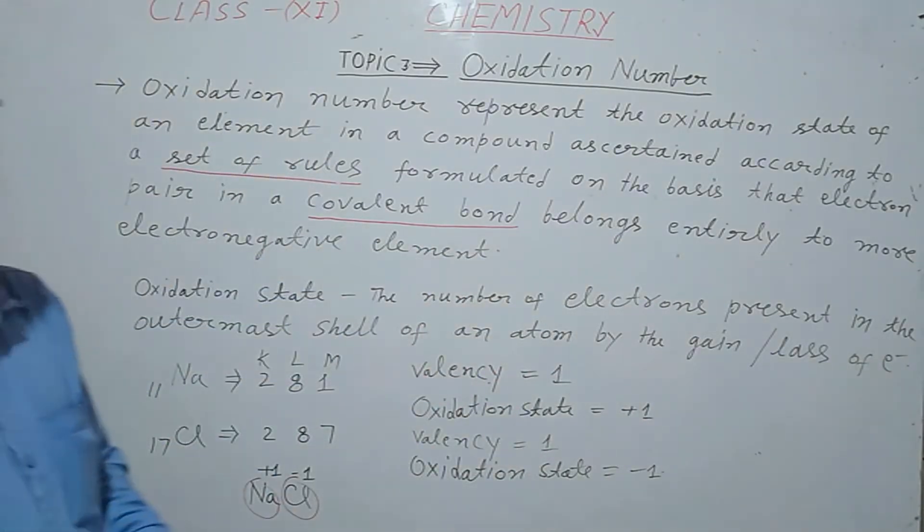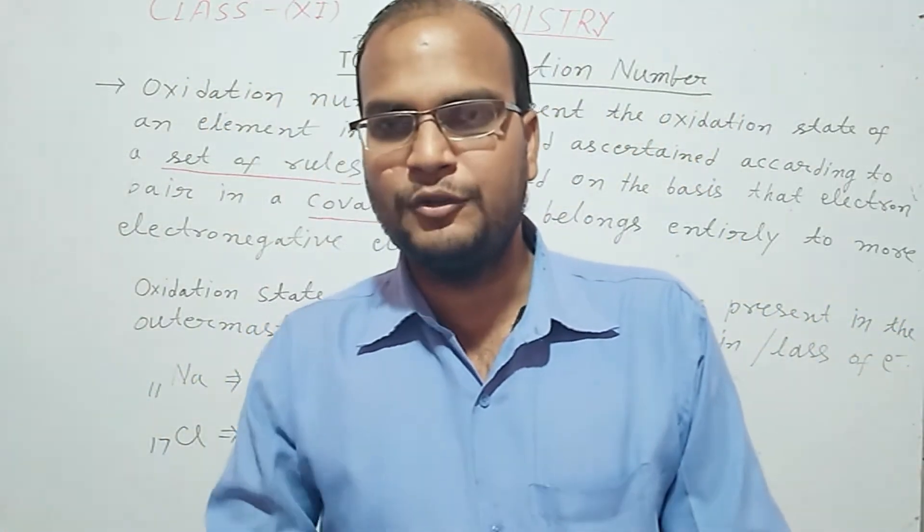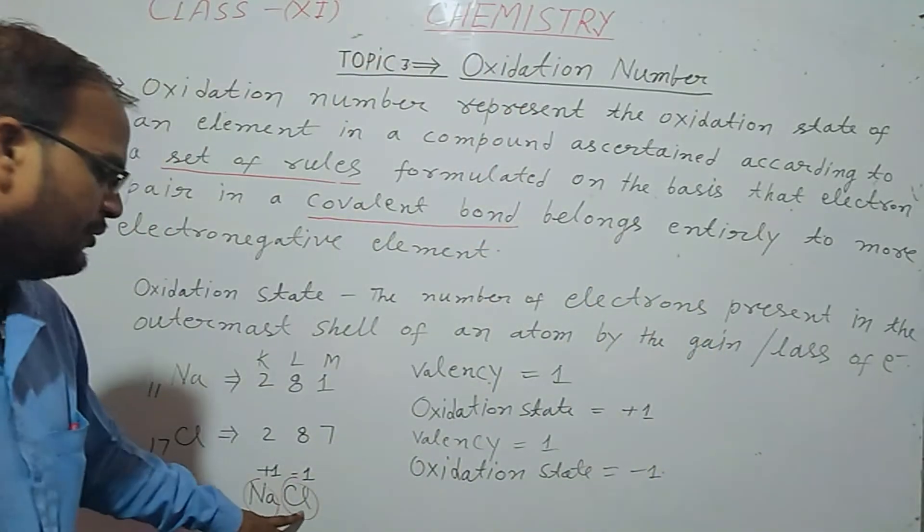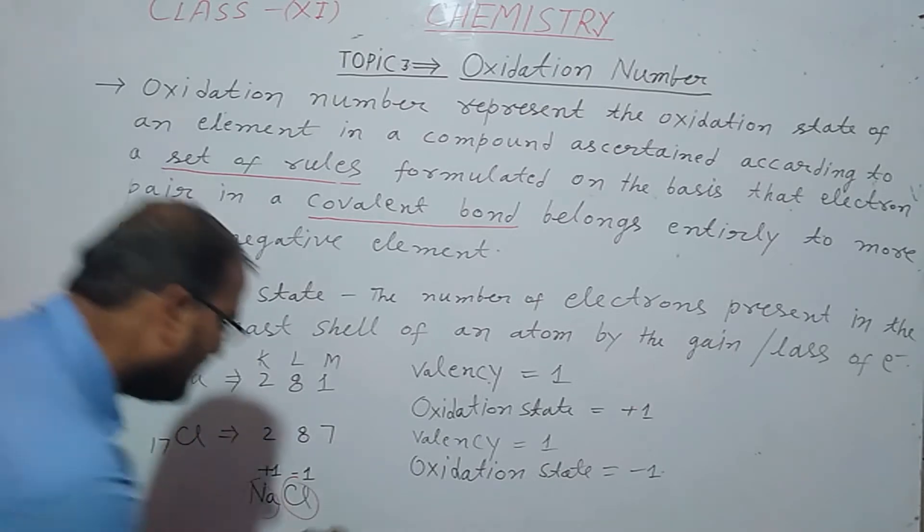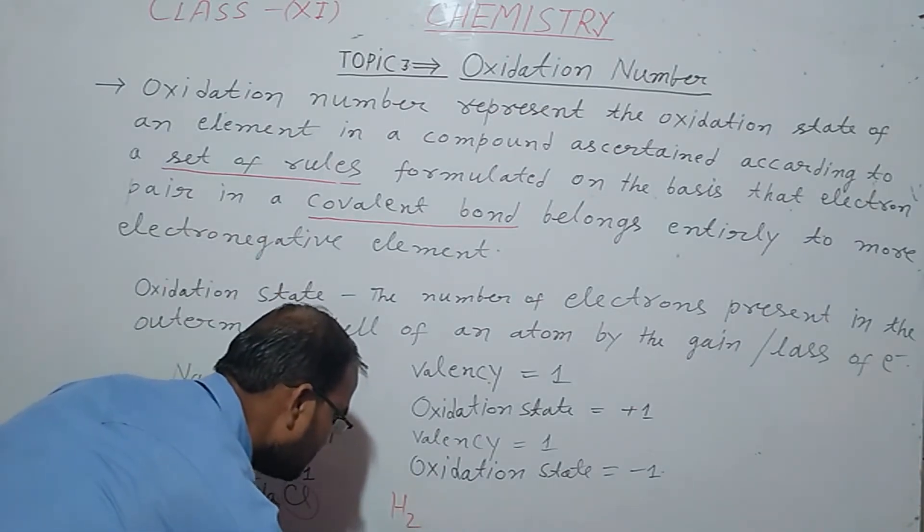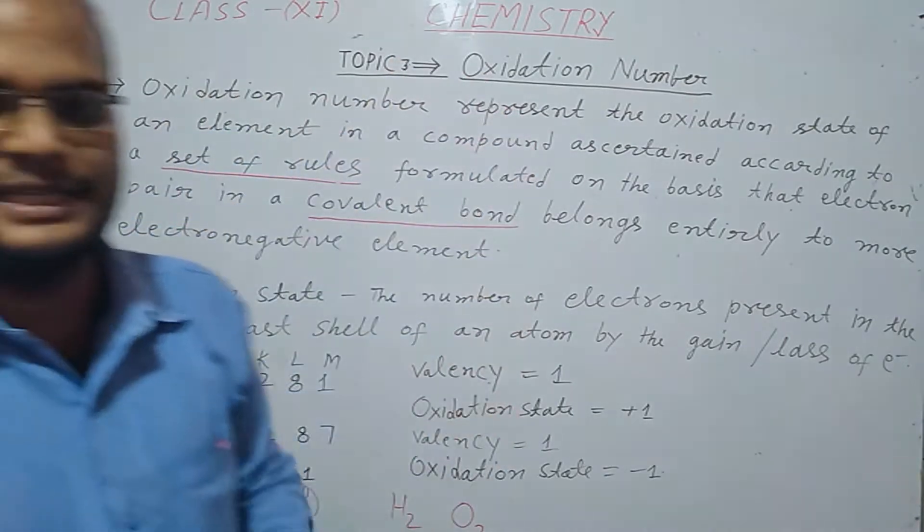In covalent compound there is more electronegative elements or more electropositive elements. When sodium and chlorine combine to form sodium chloride, sodium is electropositive element and chlorine is electronegative element. In hydrogen gas formation, hydrogen is electropositive element and oxygen is electronegative element. So we can say that oxidation number represents the oxidation state.